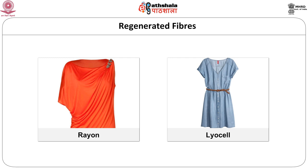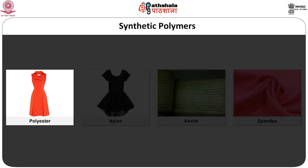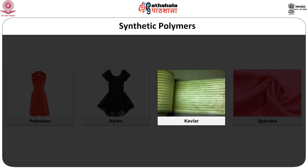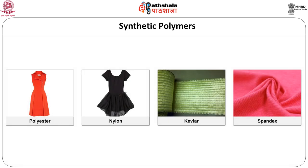The next category is regenerated fibers, which includes rayon and lyocell. Synthetic polymers are the next category, in which polyester, nylon, Kevlar and spandex are used. These fibers are modified based upon the end uses. The main finishes given are nano finishes.